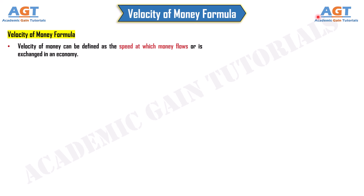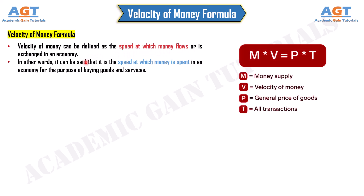Velocity of money can be defined as the speed at which money flows or is exchanged in an economy. In other words, it can be said that it is the speed at which money is spent in an economy for the purpose of buying goods and services. It is also referred to as the turnover in money supply.